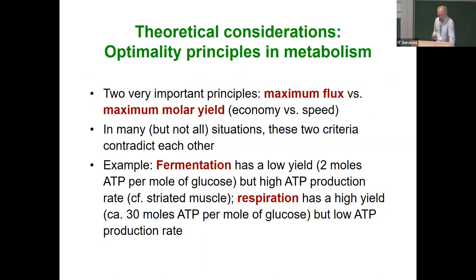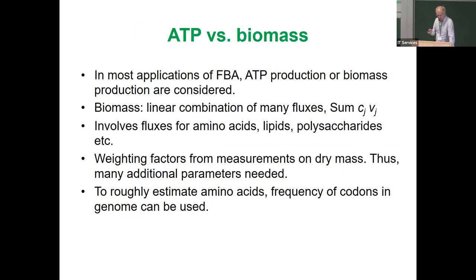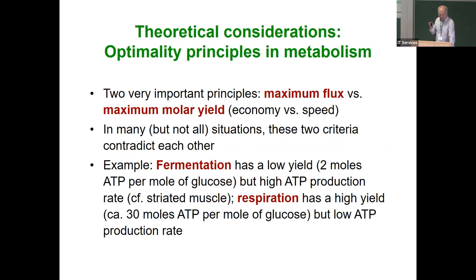ATP or biomass need not be the only target metabolites. Coming back to this very relevant question: what is really maximized in FBA — a rate or a yield? There is abundant literature on this, also from game theory and optimization. There are two very important optimization principles: maximum flux versus maximum molar yield, which we can call economy versus speed.